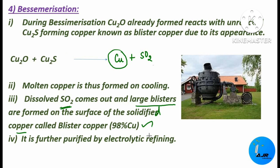This copper contains about 98% copper. The blister copper obtained during the bessemerization process is further purified by electrolytic refining. This is how copper is extracted from its ore. Thank you for watching — this is Dr. Anita Raj signing off. See you in the next session with another important topic.